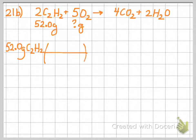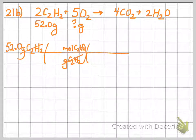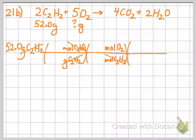We're going to use molar mass to convert grams of acetylene to moles of acetylene. We're going to use a mole ratio to convert moles of acetylene to moles of oxygen this time because we're converting to oxygen. And then molar mass to convert moles of oxygen to grams of oxygen.